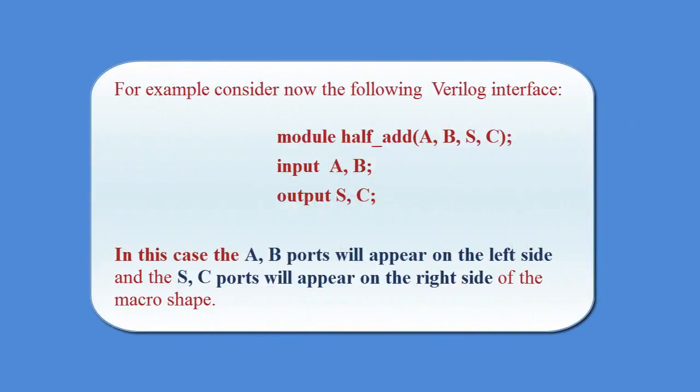For example, consider now the following Verilog interface. In this case, the A-B ports will appear on the left side and the S-C ports will appear on the right side of the macro shape.